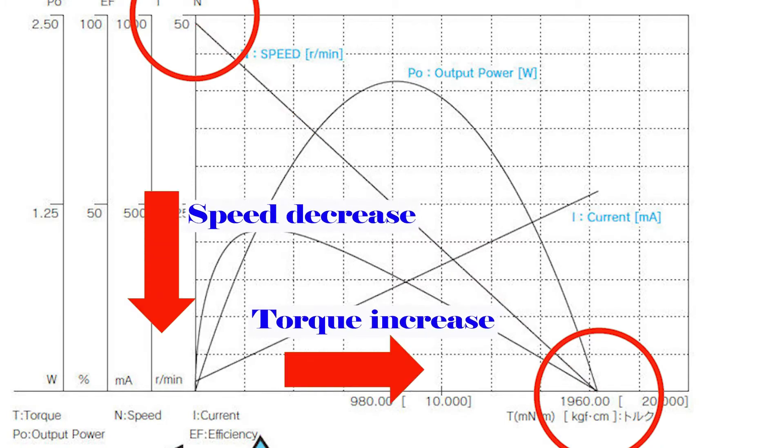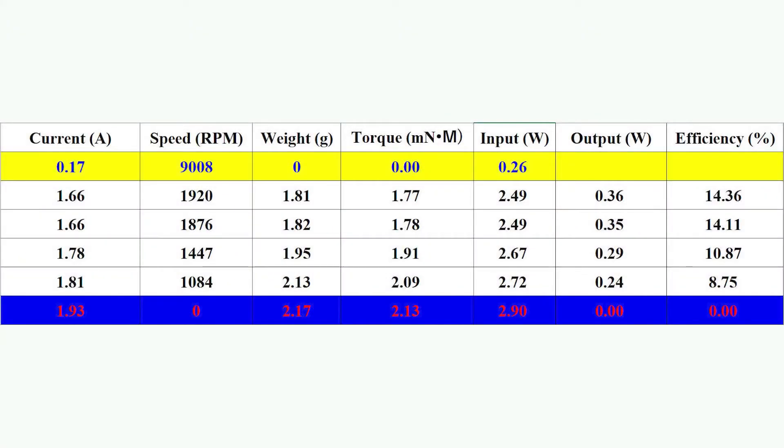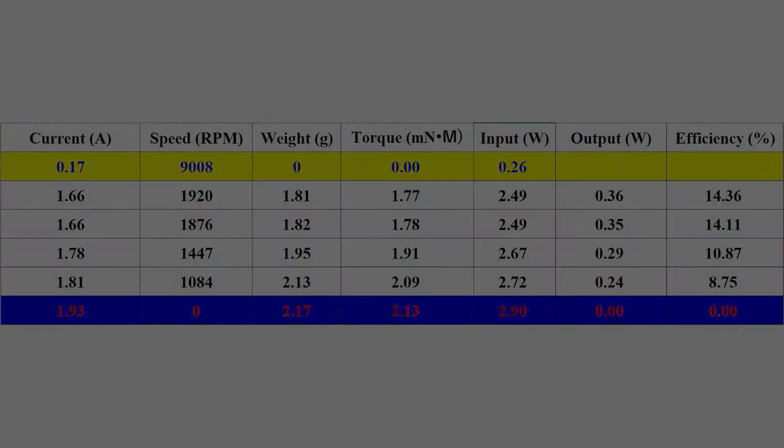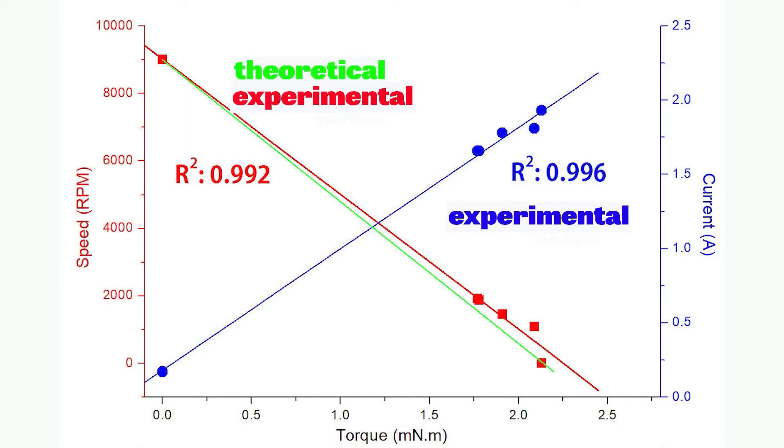The relationship between speed and torque is linear. When speed decreases, the torque increases. I measured the torque and speed using my BG DC 130 motor. It works just as theoretically explained.